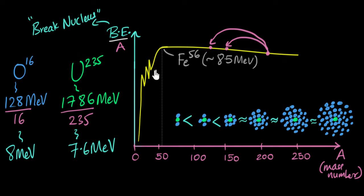Can you predict why lighter elements — like carbon or nitrogen — can't undergo nuclear fission? If a light element undergoes fission and splits, the products would be even lighter nuclei, which are less stable compared to the reactant. Since this moves away from stability, the reaction is not favored and is not spontaneous. So lighter elements don't undergo fission.